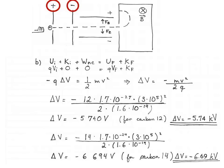For carbon-14, the potential difference is 14 times the atomic mass unit (1.7×10⁻²⁷ kg) multiplied by (3×10⁵ m/s)², divided by 2 times 1.6×10⁻¹⁹ C. That gives a potential difference of minus 6,694 volts, or −6.69 kilovolts. So there's roughly a thousand-volt difference between the two.